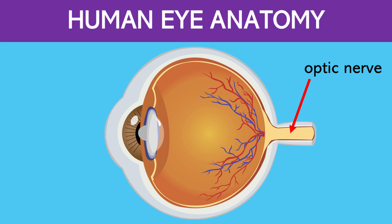This is the optic nerve. This is the nerve that transmits electrical signals from the retina to the brain, where they are interpreted as visual images.